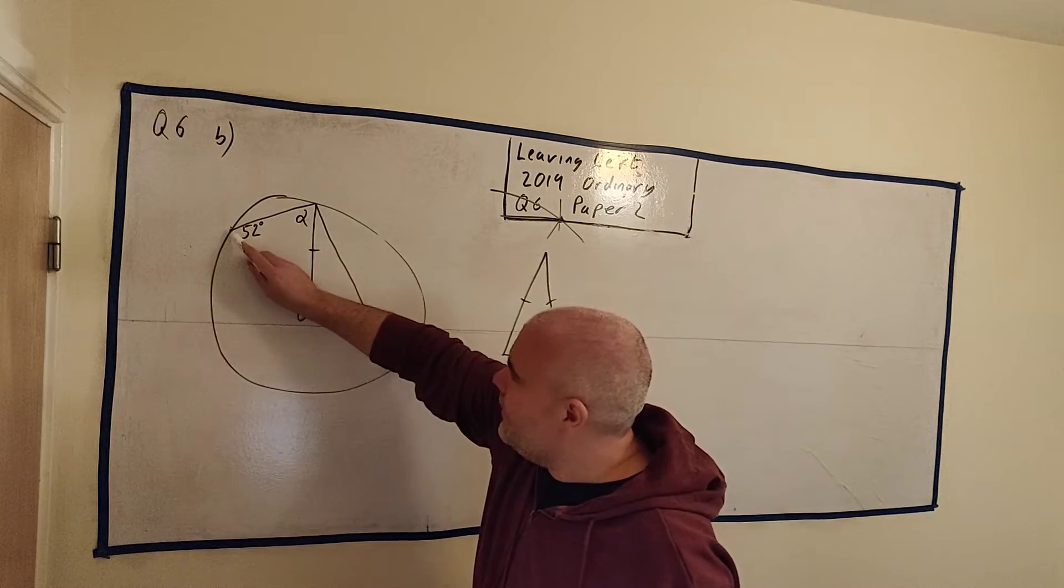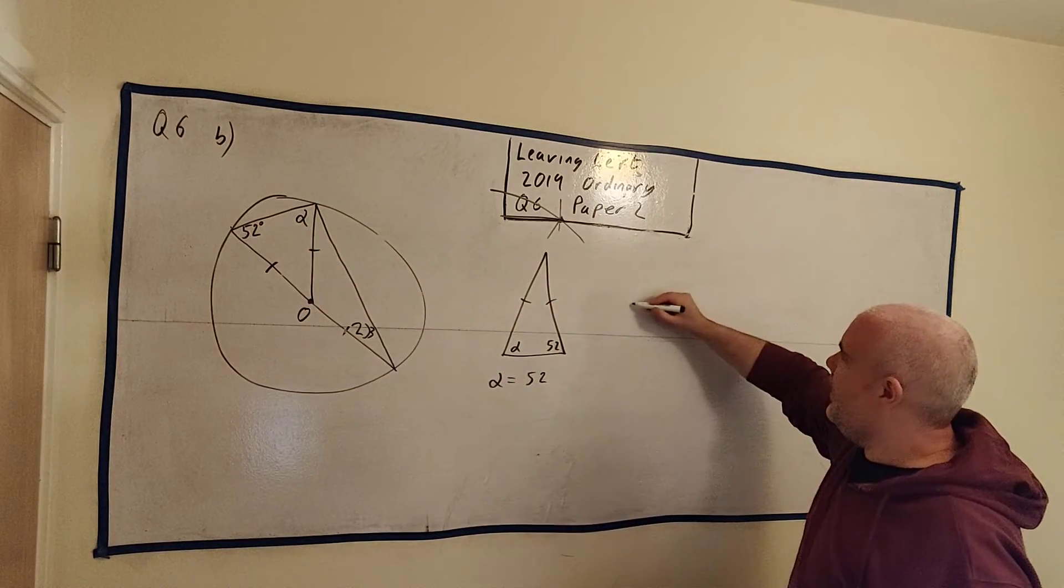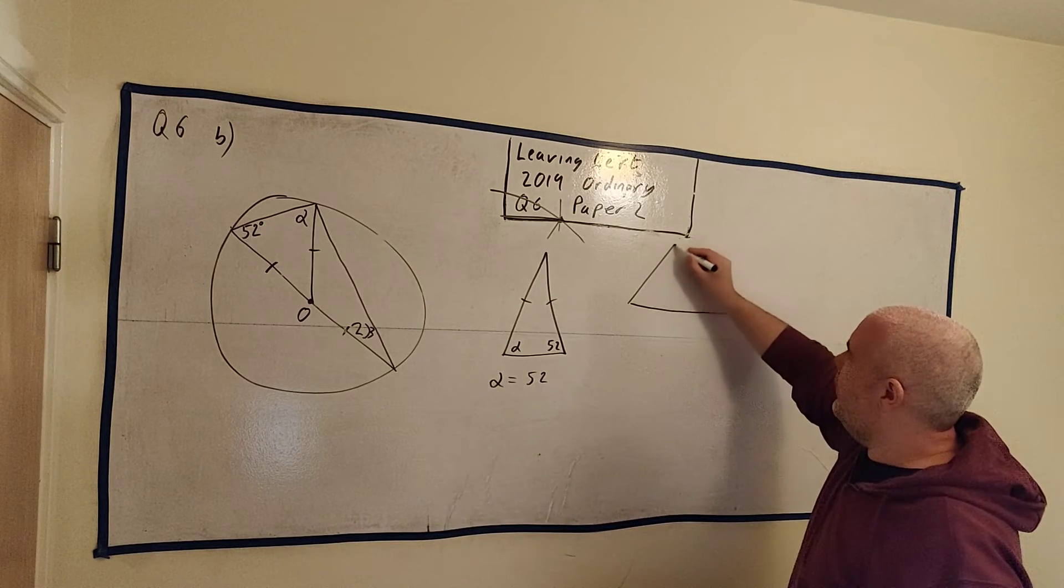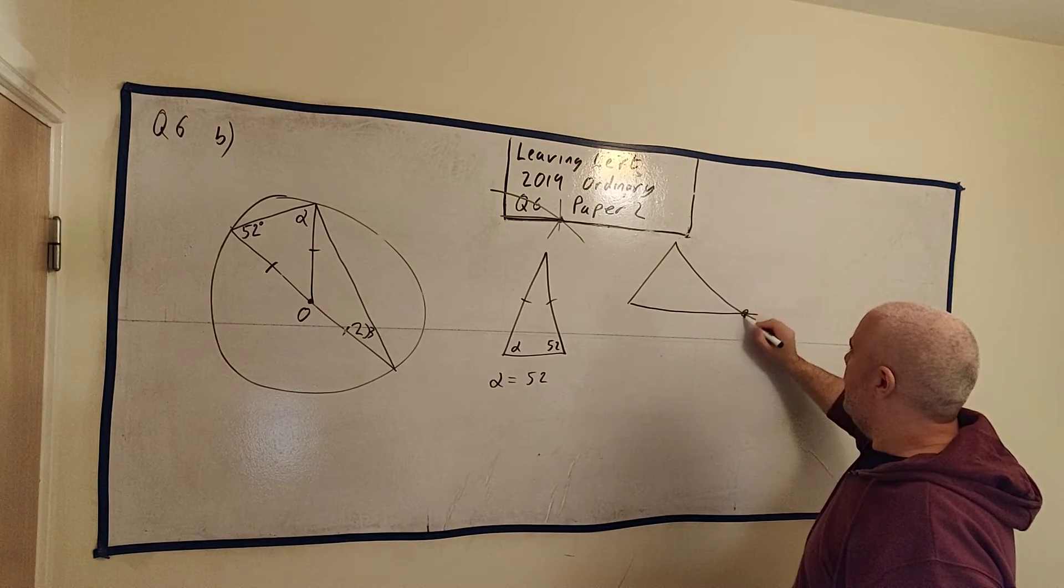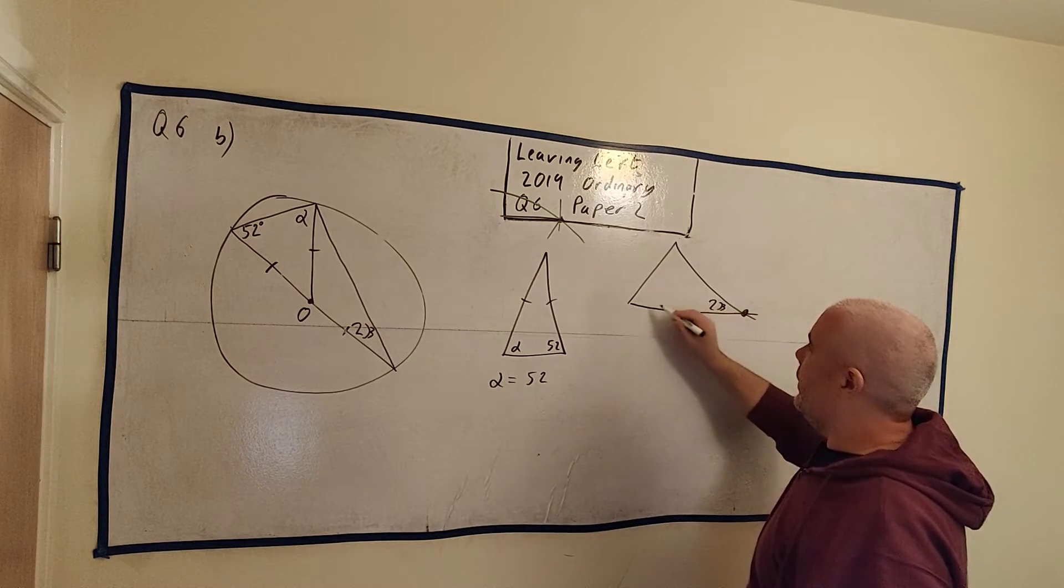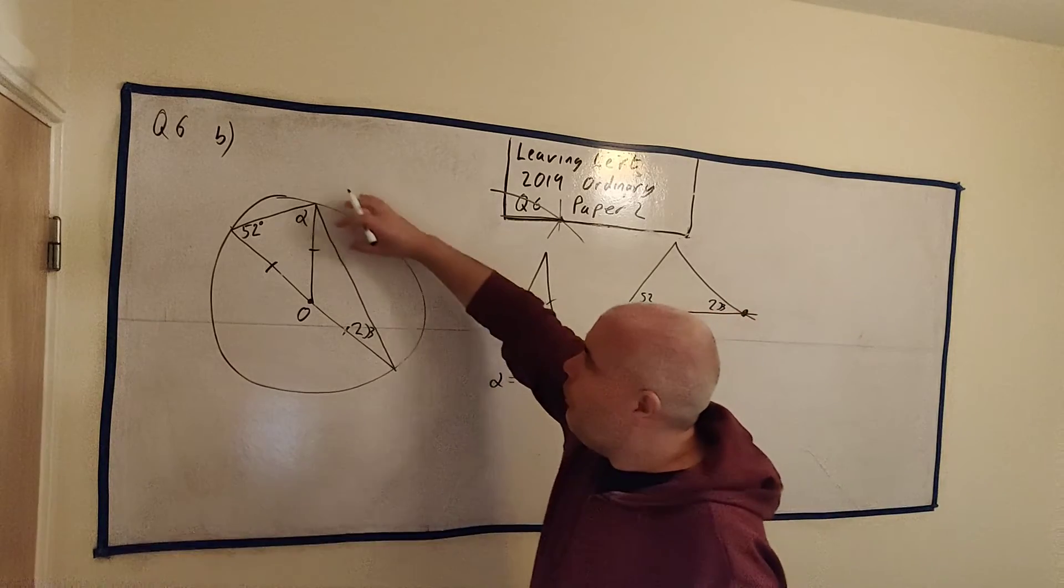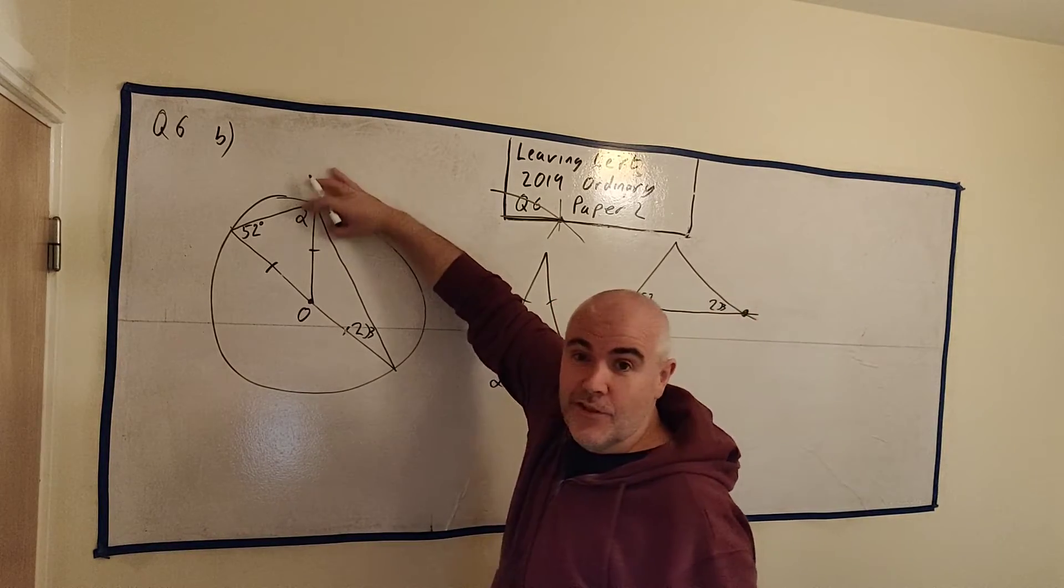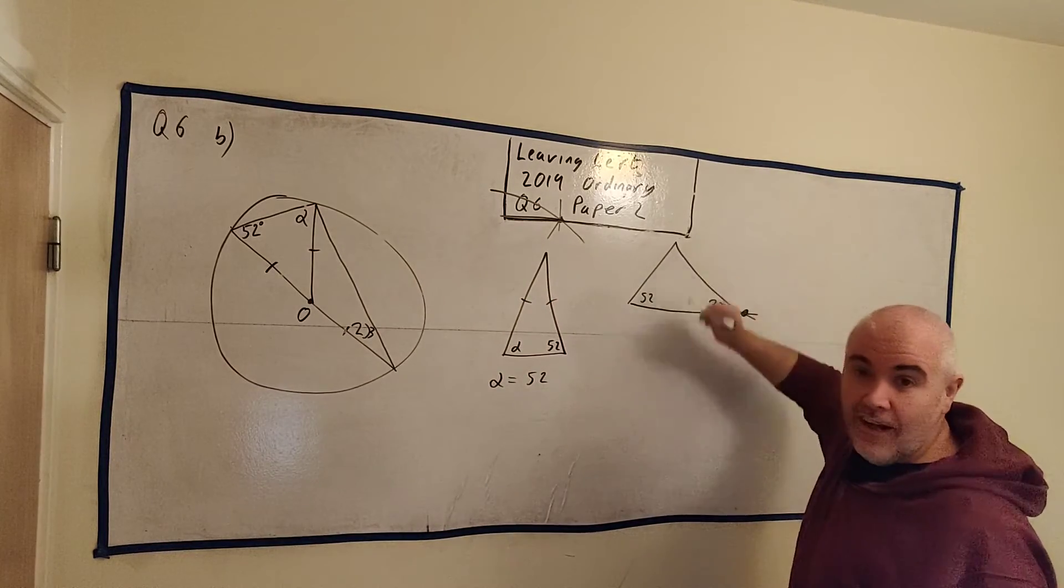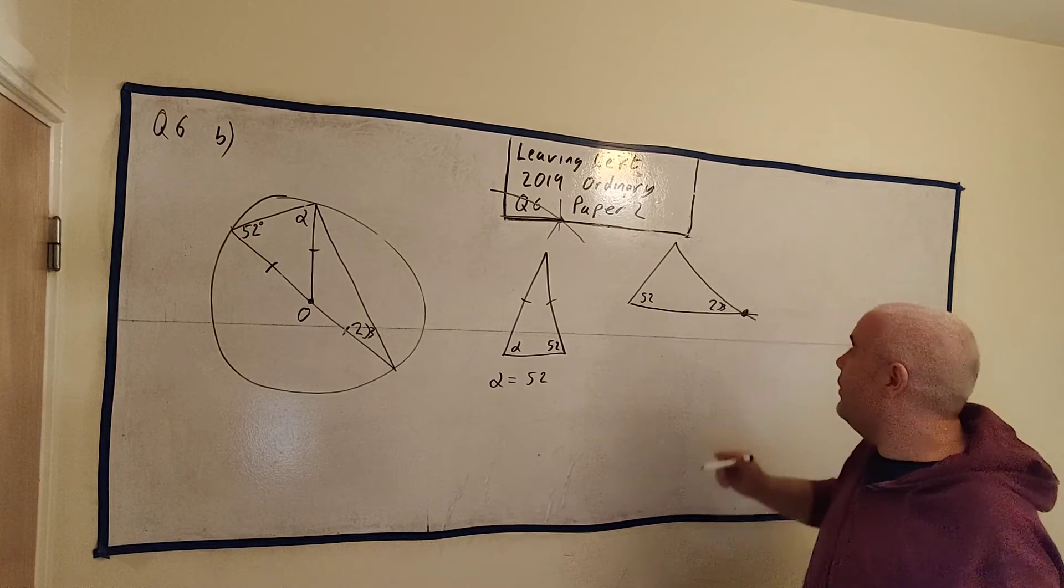And that information is a little harder. I wouldn't expect a primary school student to know this one. But that information is this triangle here, this big triangle. Let me draw this again here, where this is 2 beta and this is 52. What angle is up here? And it's something you are expected to know. That is the secret to this question.